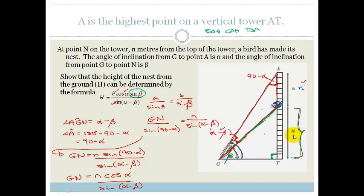Sine of beta is opposite over hypotenuse. That works. So let's write it down. Sine beta is equal to H over GN. Therefore, H is going to be GN times sine beta. But GN is all of this. So then all we have to do is put it together.